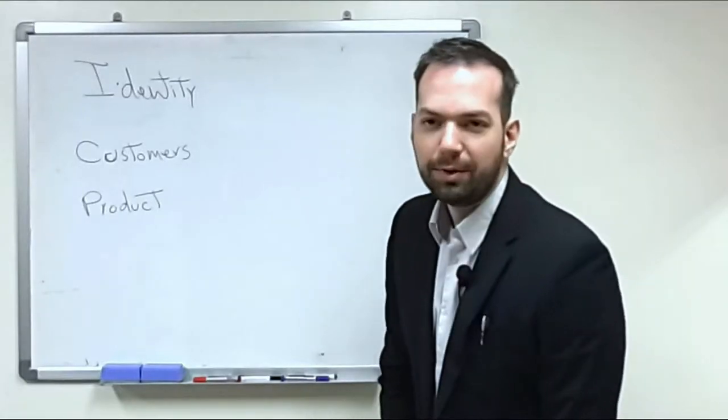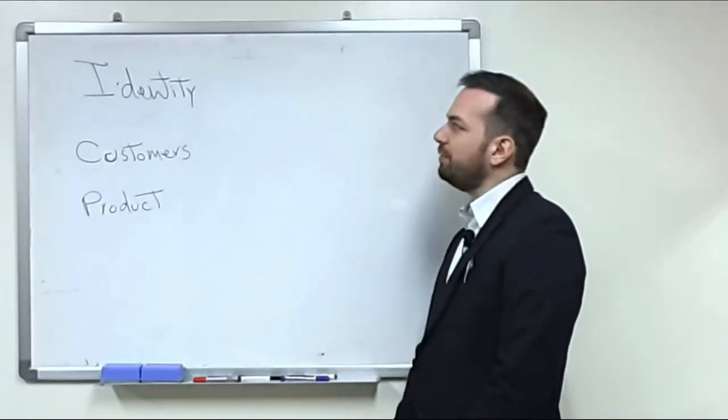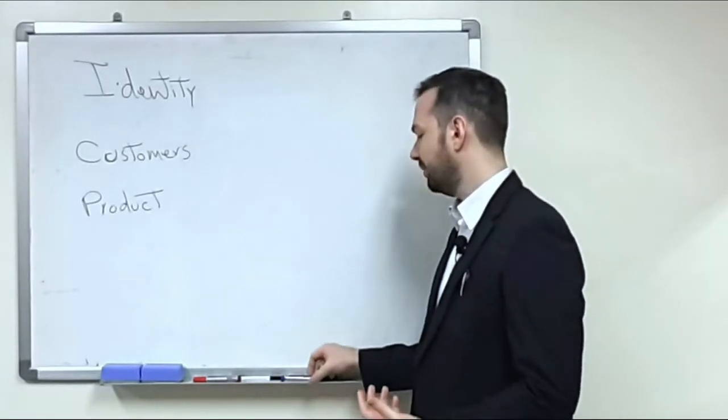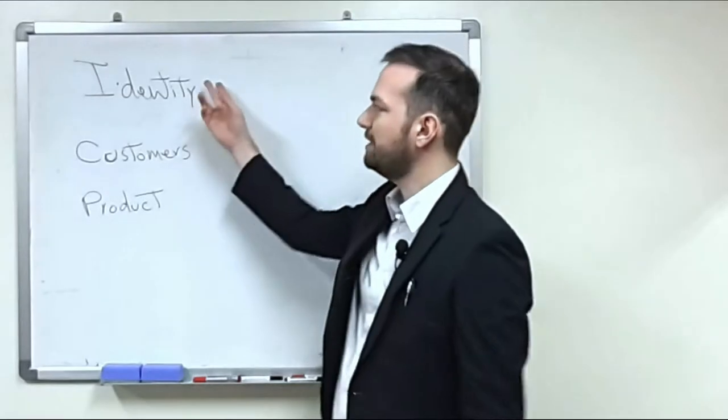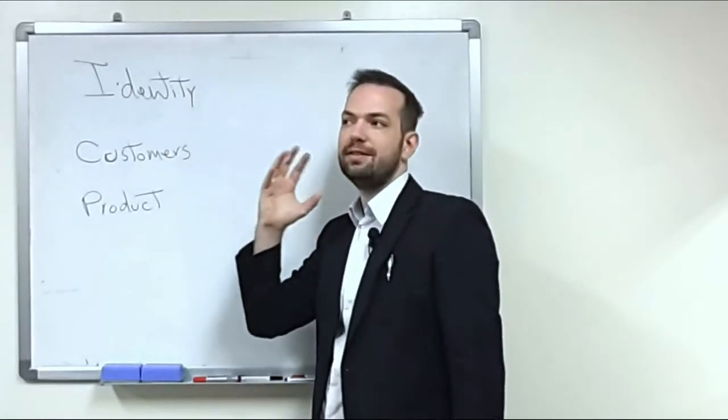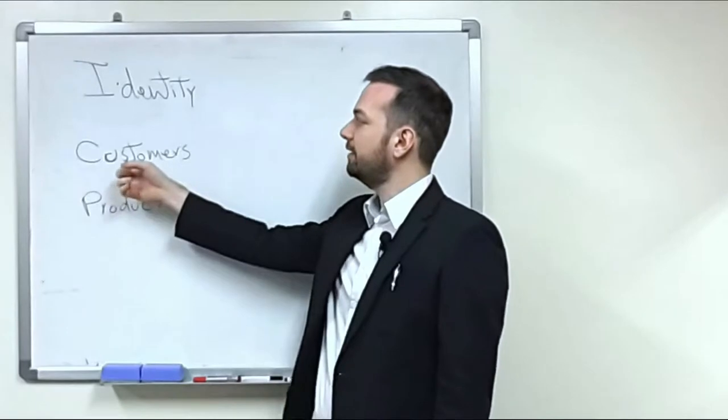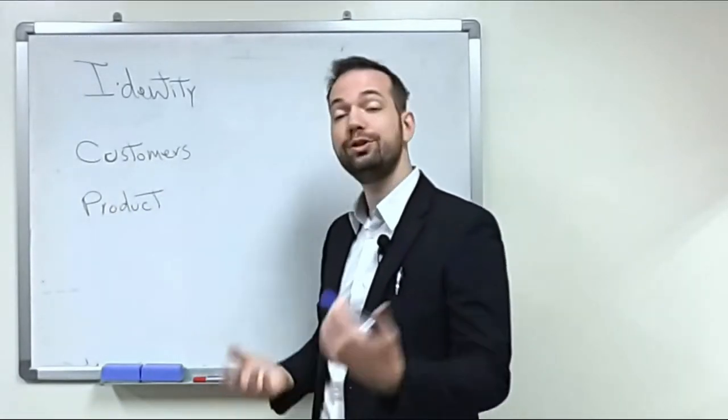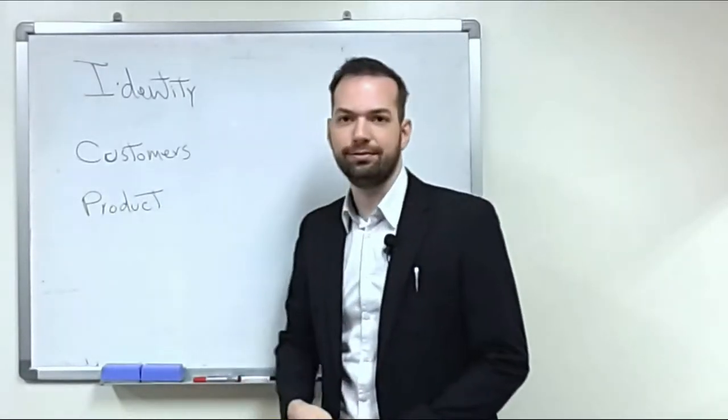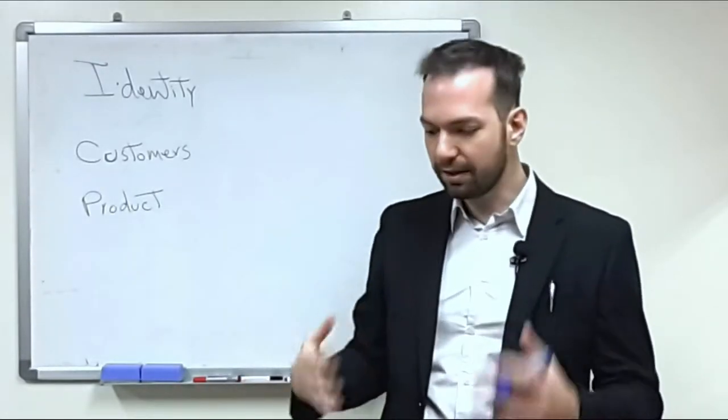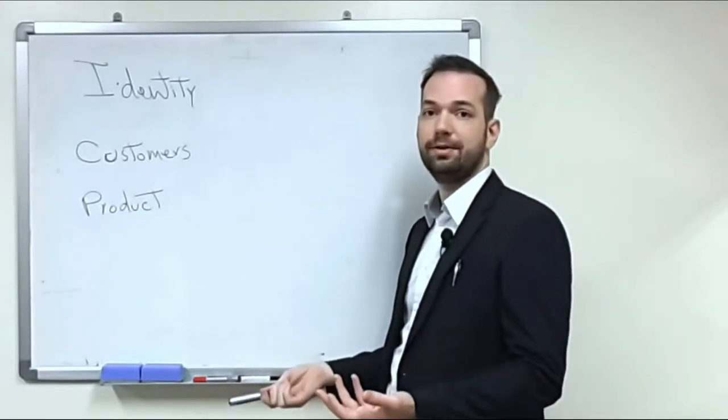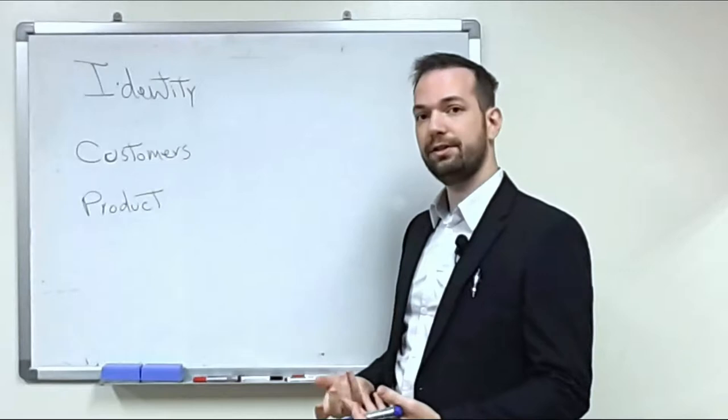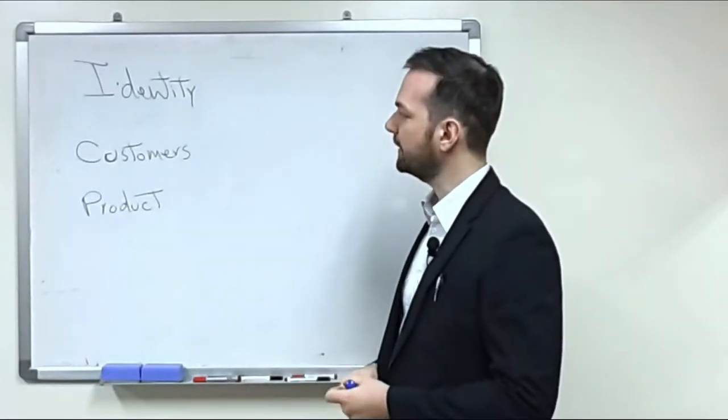Welcome back everyone. Today we're going to talk about how technology affects the business model we talked about before. So in the last lecture I talked about business identity, what a business hopes to achieve, and then customers, who are the customers that the business has and who could the customers be, and then the product itself. So what product does the company actually provide to its customers? Is it an object like a marker? Is it a service like support or something like that?